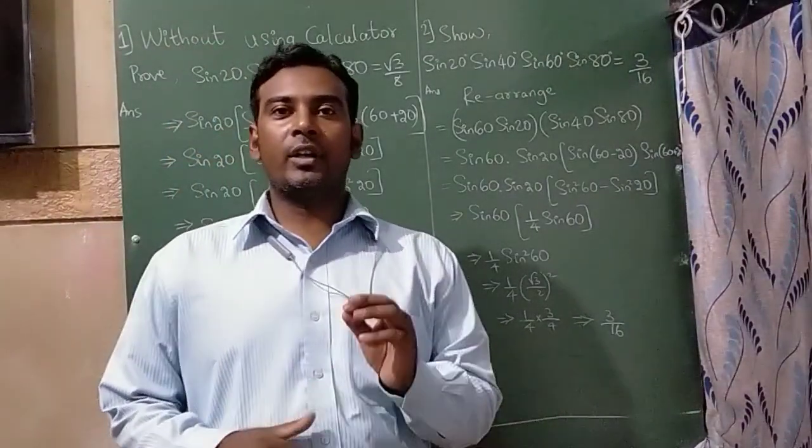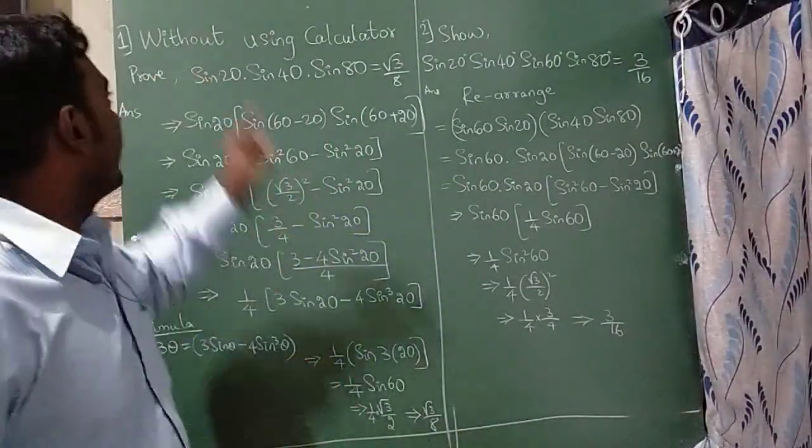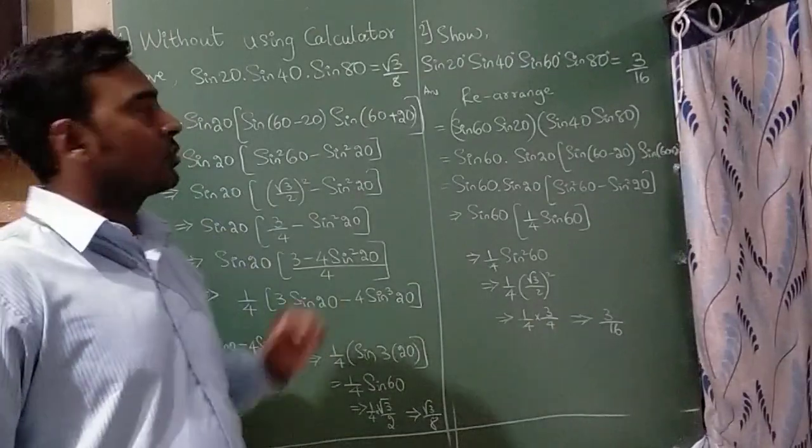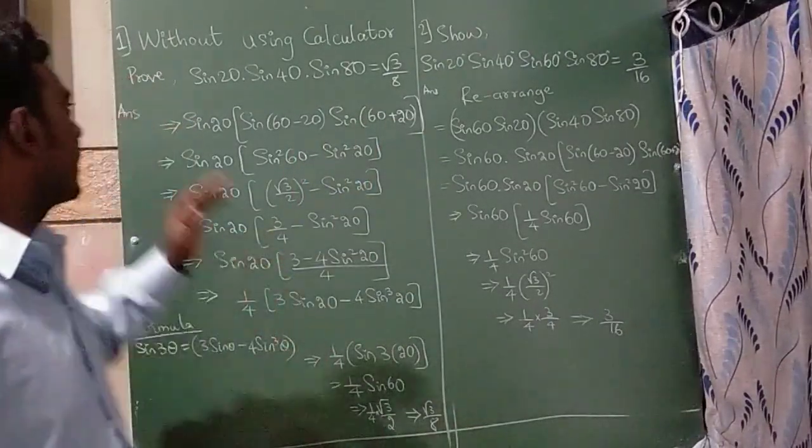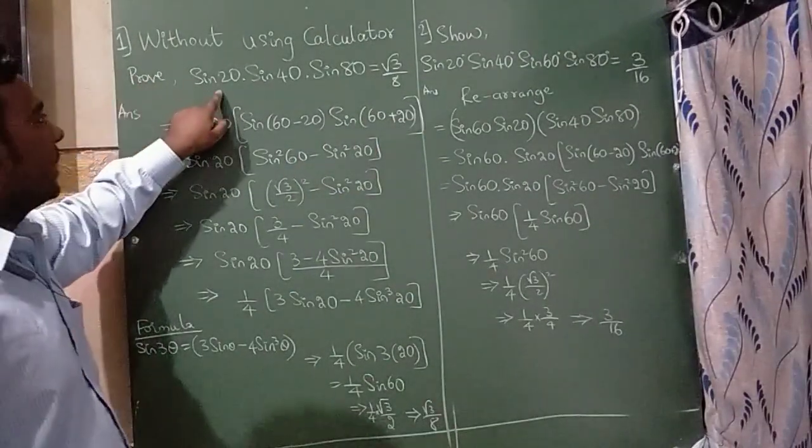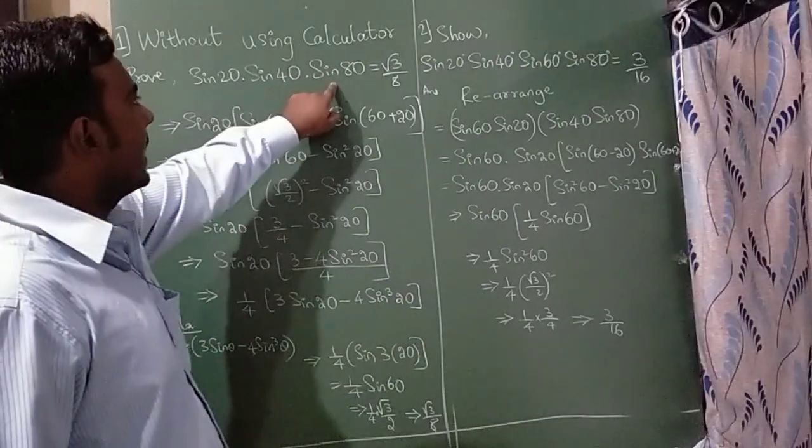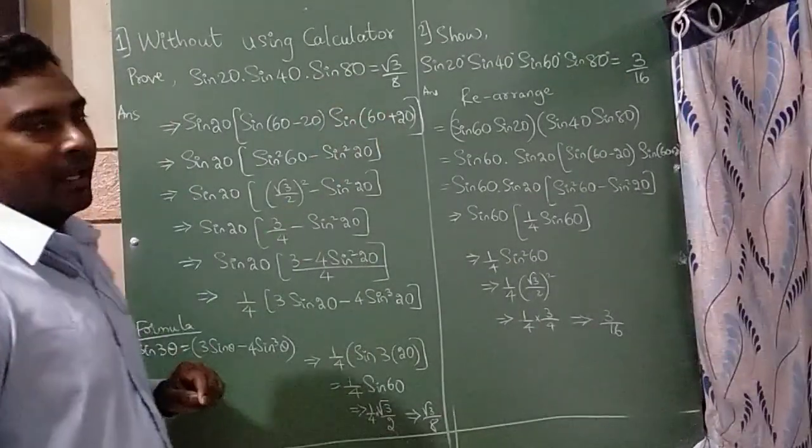Hello everyone, today I am going to teach trigonometric sums without using calculator. So I have written two sums here, let's start with the first one. Prove sin 20 degree, sin 40 degree, sin 80 degree is equal to root 3 by 8.